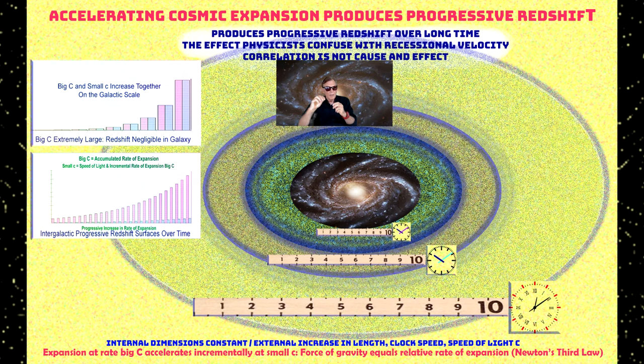So these accumulation of eons of incremental increases to big C at the rate of little c every second means we have a rate of cosmic expansion, and it is probably approaching infinity, but it doesn't matter because it's within an infinite void.